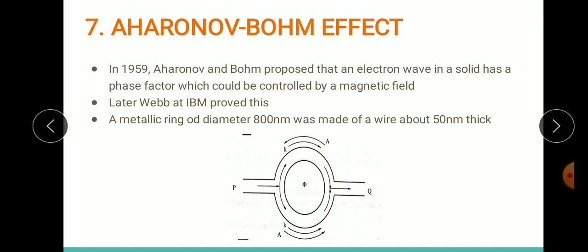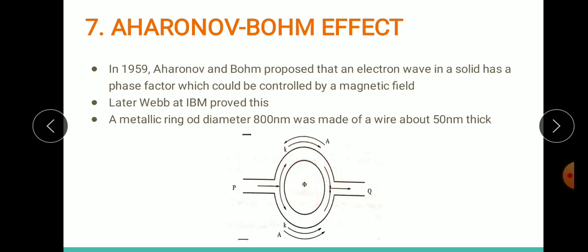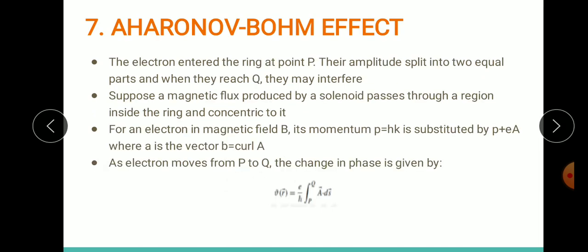Now suppose I am creating a magnetic flux in this region inside the ring by introducing a solenoid. What happens when a magnetic field comes across this structure? For an electron in a magnetic field, their momentum p becomes p + eA. Here A is the vector potential where B = curl A.